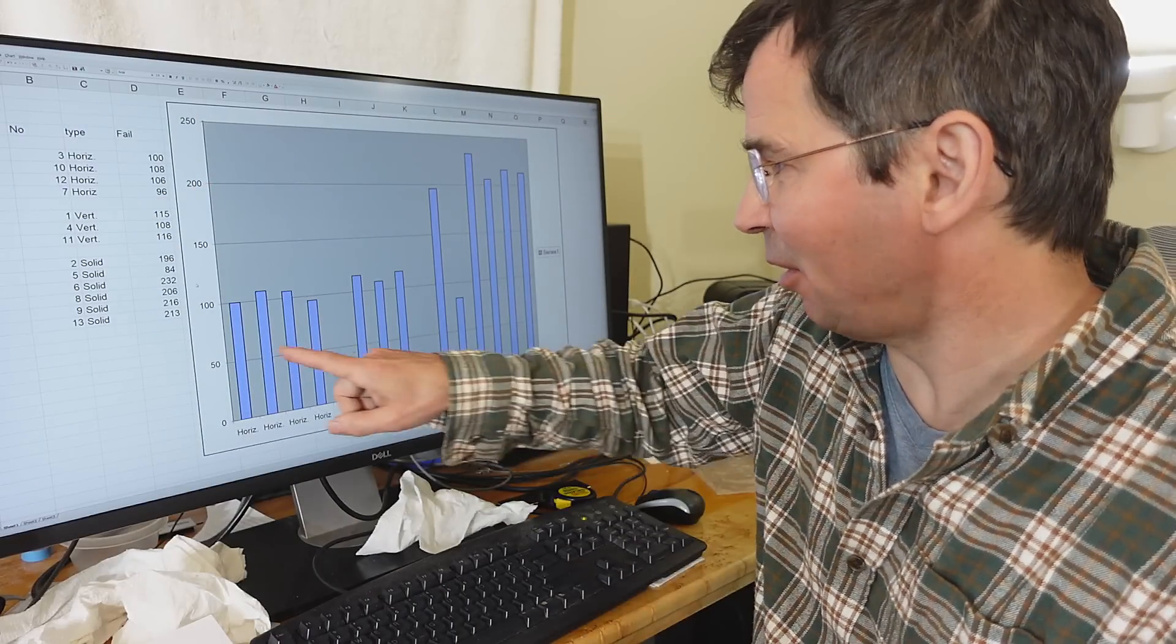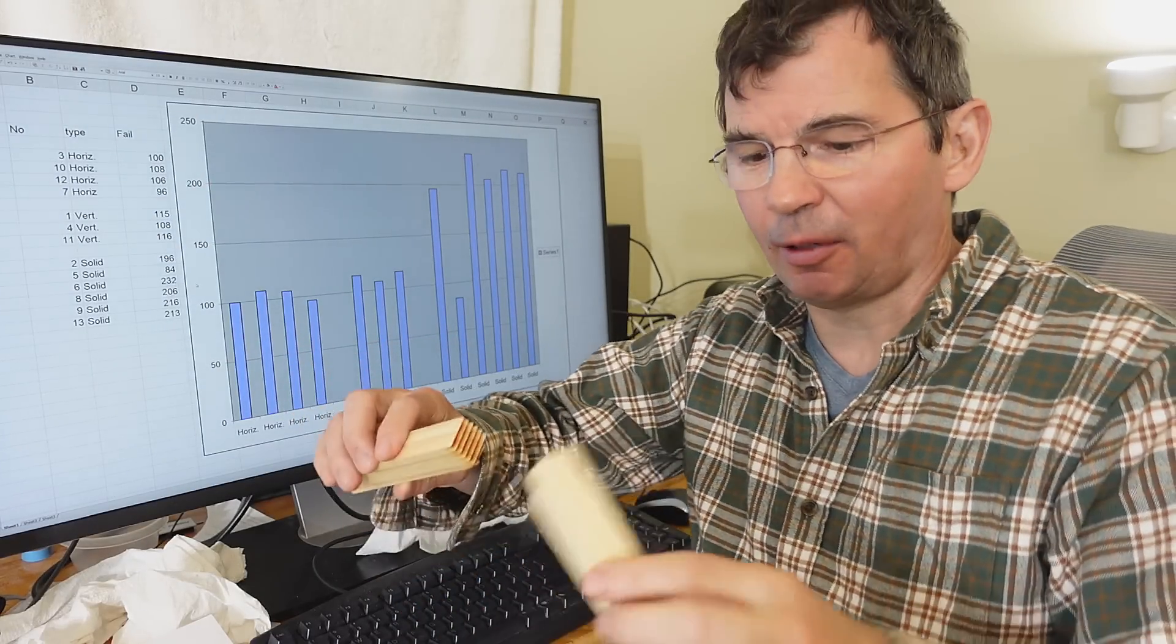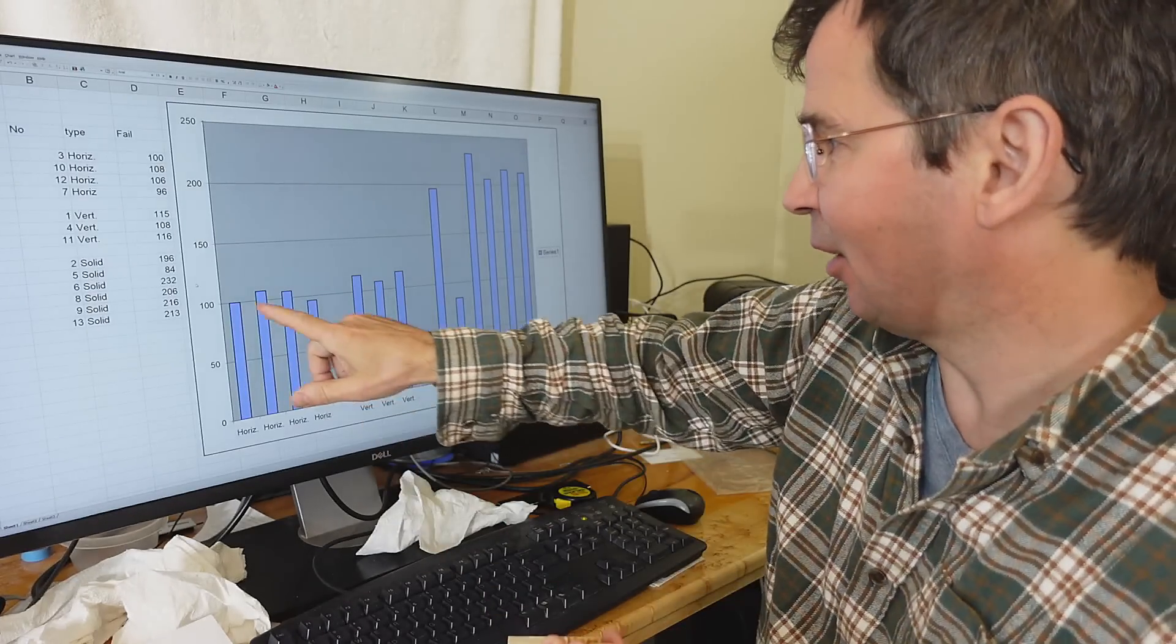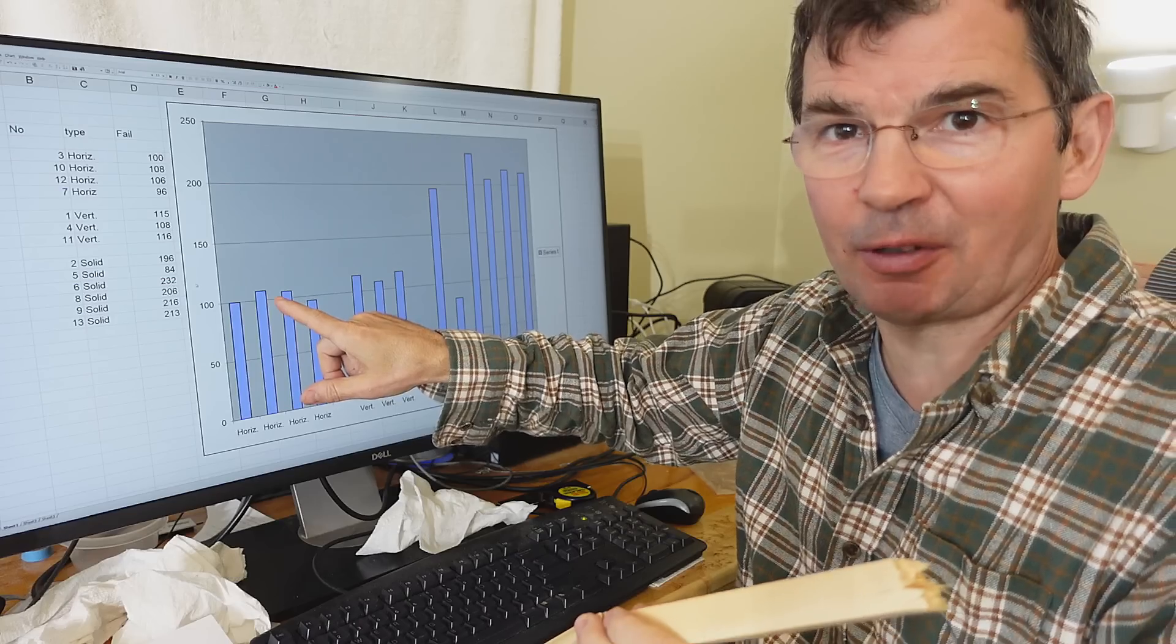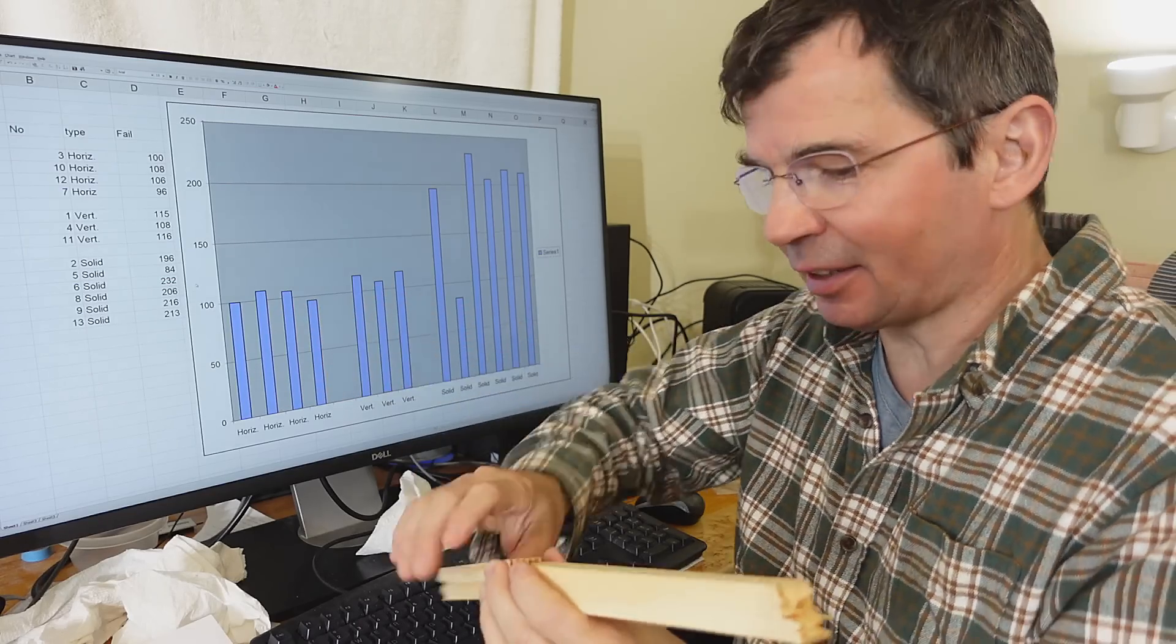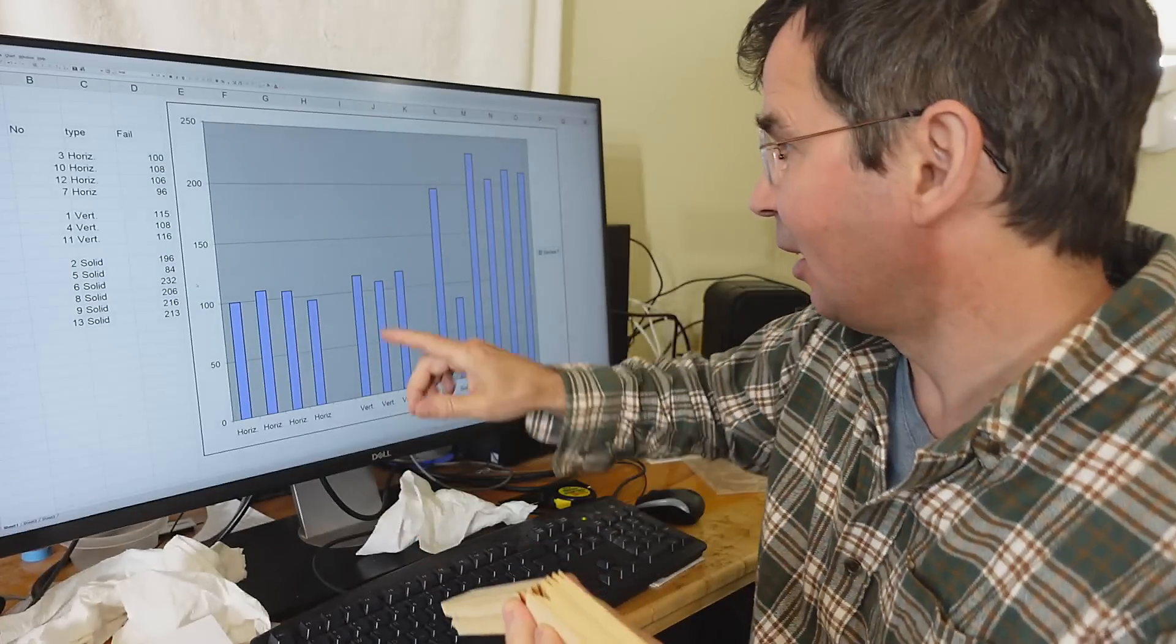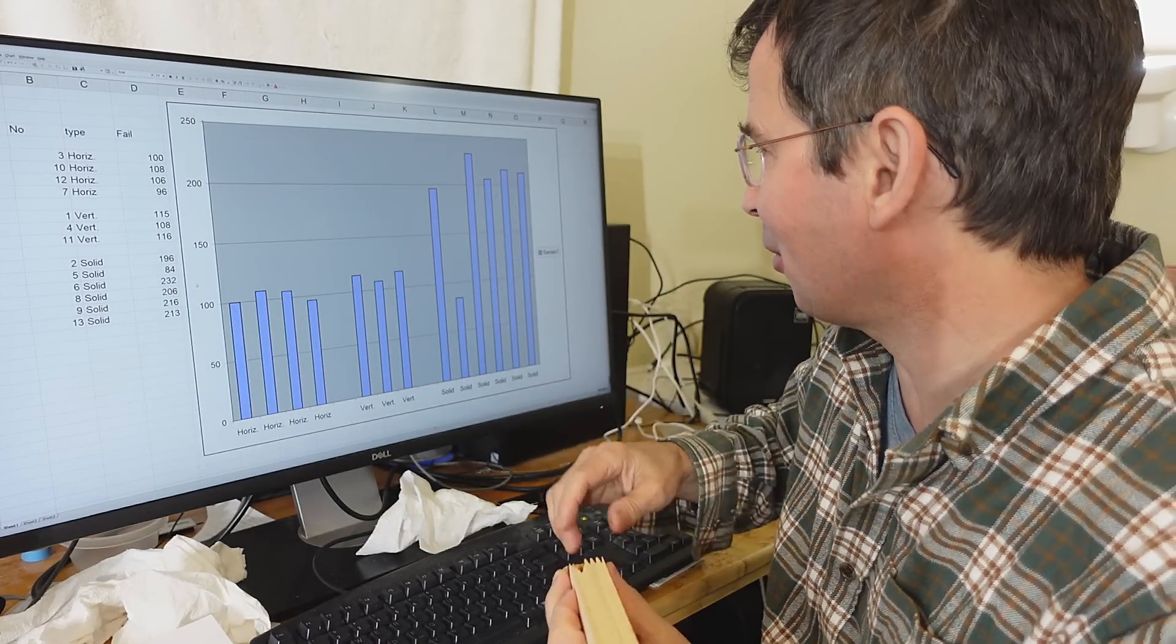Now tabulating the results. The first four are where I was breaking the joint like this with the fingers in the horizontal position, and those averaged around 100 kilograms breaking force. Next is the ones where I had the fingers in the vertical orientation as I broke it, and those did slightly better, maybe 110.